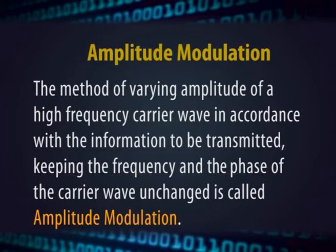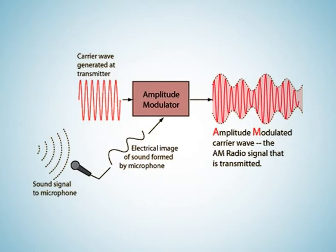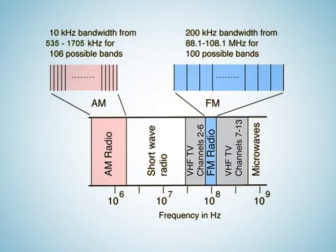Amplitude modulation is the method of varying the amplitude of a high-frequency carrier wave in accordance with the information to be transmitted, while keeping the frequency and phase of the carrier wave unchanged. The information is considered the modulating signal and is superimposed on the carrier wave by applying both to the modulator. Amplitude modulation was the first type of modulation used for transmitting messages over long distances. The AM radio range is between 535 to 1705 kilohertz, and while AM is weaker compared to frequency modulation, it is still widely used.